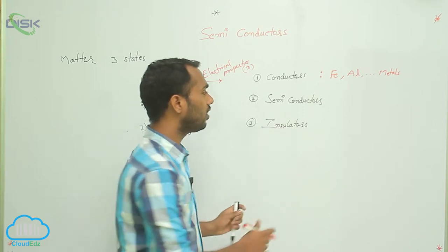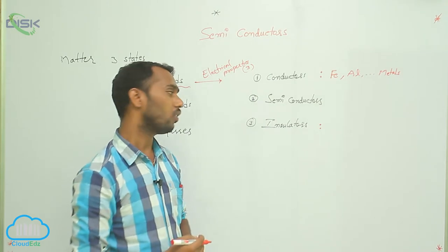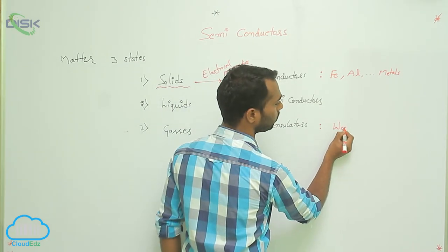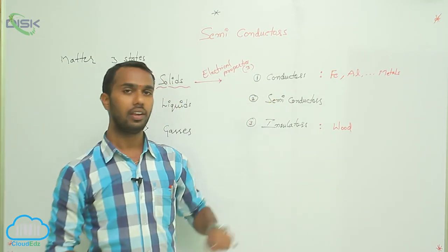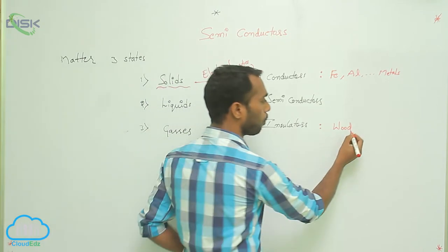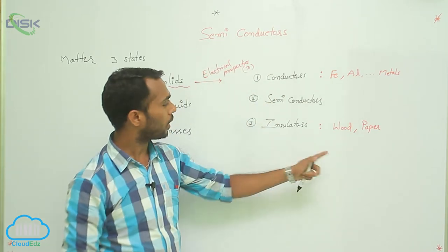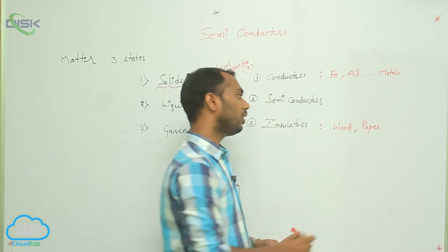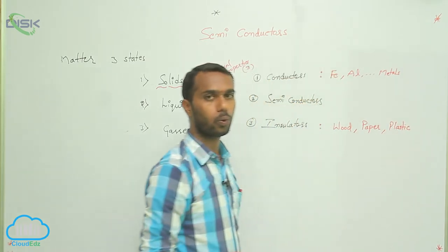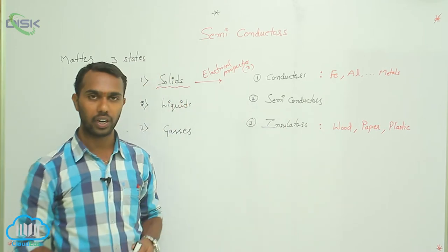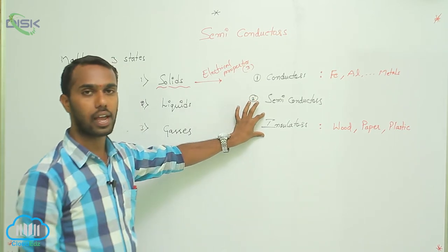What is an insulator? It does not accept the current. For example, wood is not accepting current, so wood is called an insulator. Paper also does not accept current, so paper is also an insulator. Plastic also does not allow current — that is also an insulator. So conductors accept current and insulators do not accept current.